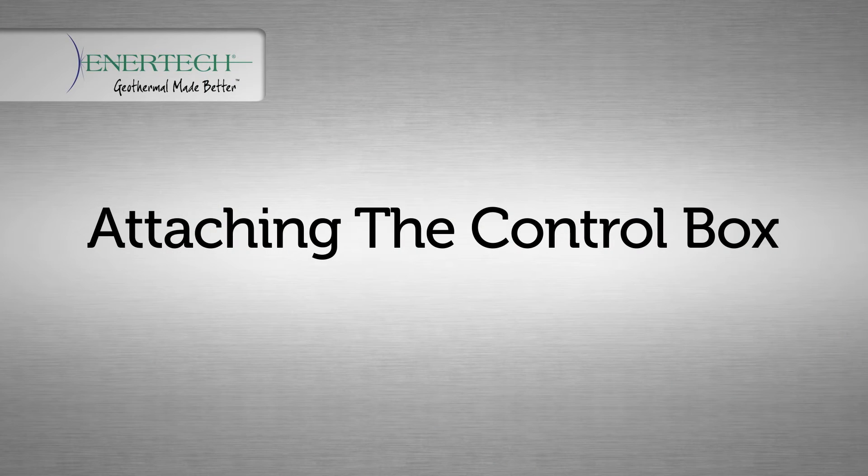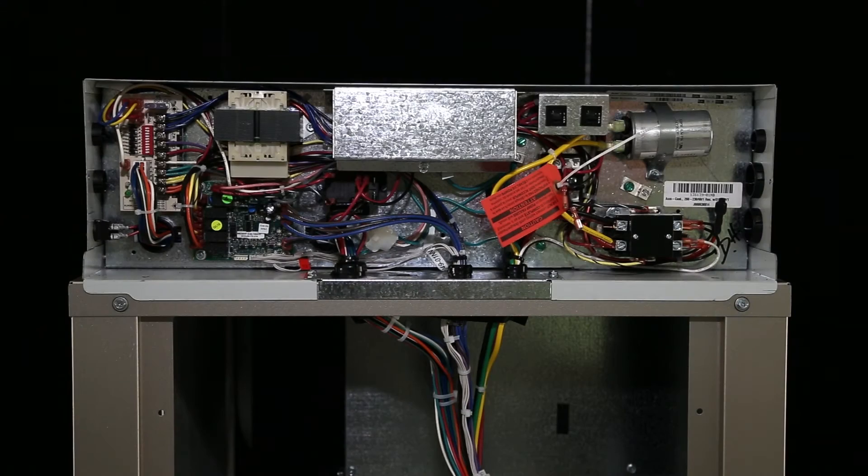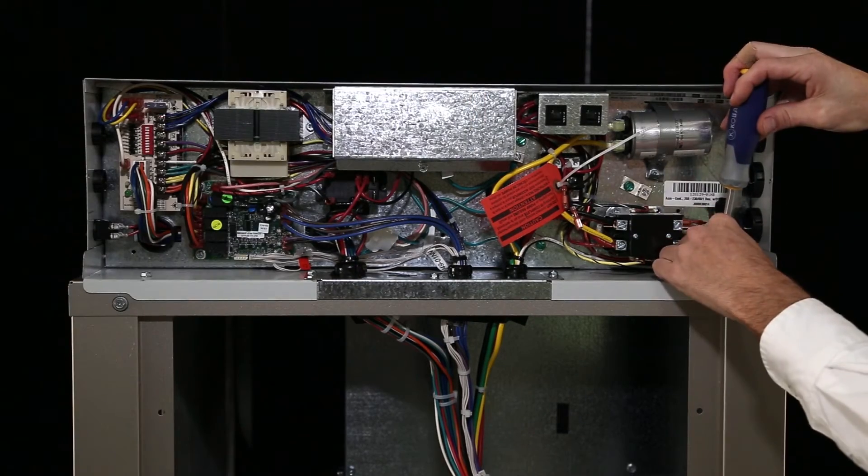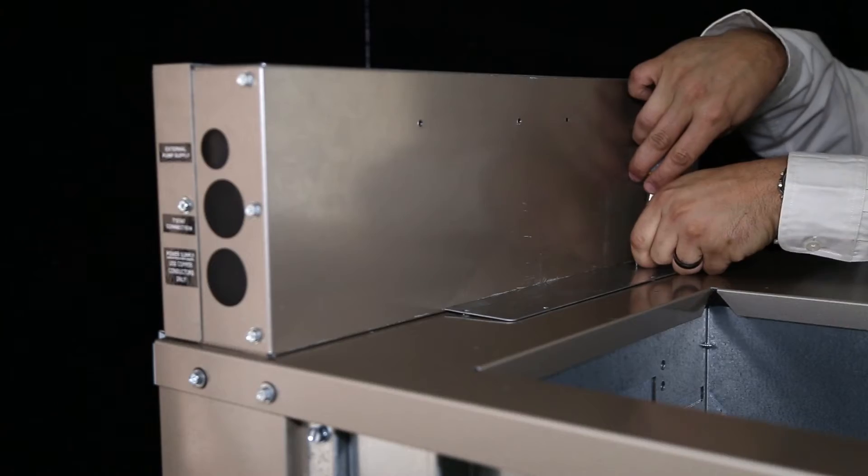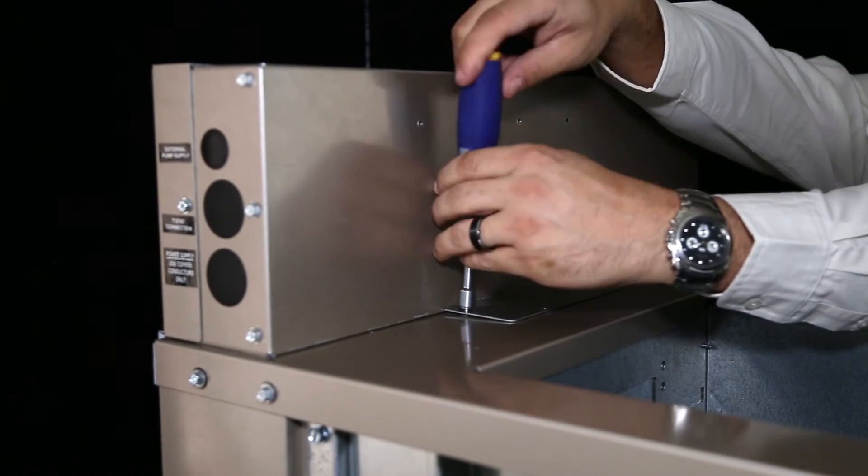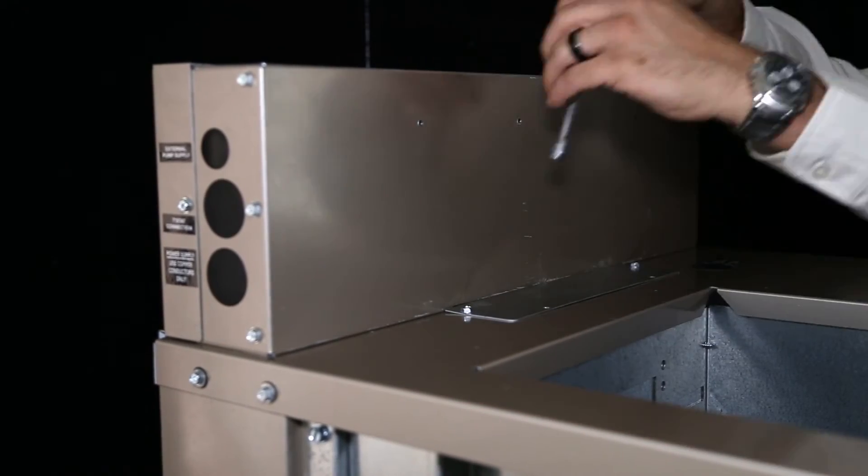Now it is time to attach the control box to the top of the unit. First align the screw holes in the control box to the top cover. Insert, start, and tighten three screws, left, right, and center for the control box. Now go to the small filler plate on the rear of the control box, fastening the four screws to tighten the filler plate to the top cover.